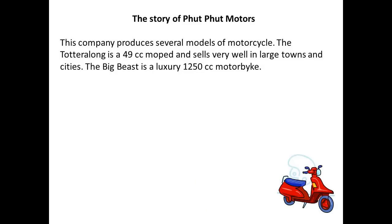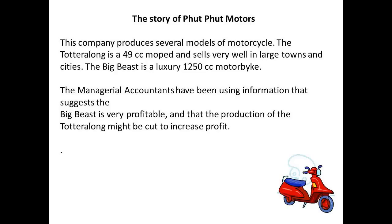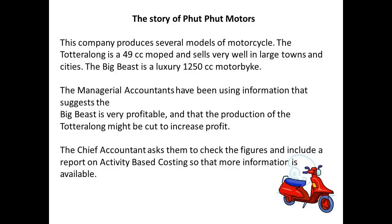Now let us work through an example. The company FUTFUT Motors produces motorcycles, and we will look at allocation of costs to two models. One is a small moped produced in large quantities; the other is a luxury bike produced in much smaller quantities. The managers have been looking at their figures and they see that the luxury motorcycle, the big beast, seems to be far more profitable. They believe it would be a great idea to cut some production from the moped and produce increased volume of the big beast. The chief accountant is not convinced there is good information available to take such a decision, and so asks for a more detailed study comparing the cost of production of the two models by allocation according to activity-based costing.